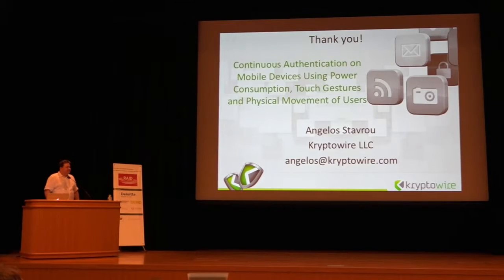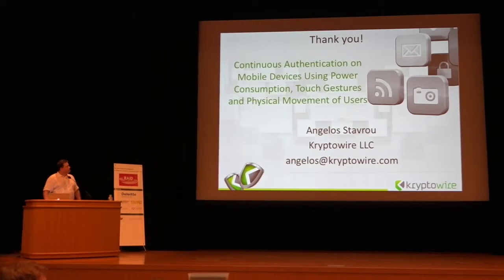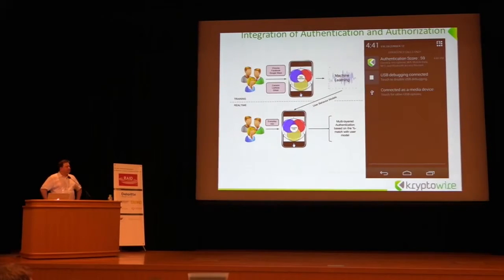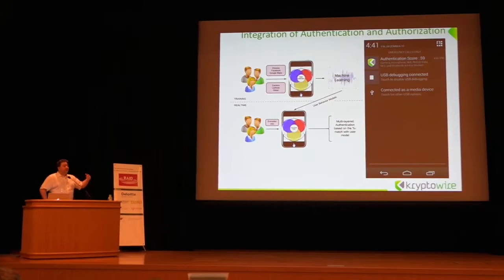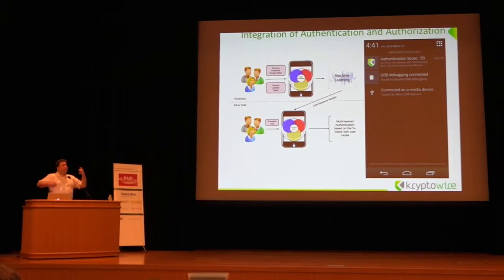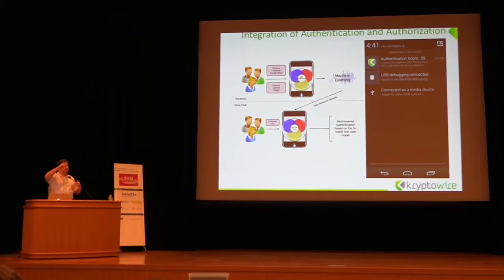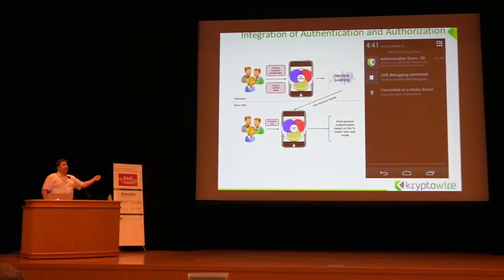Q: Thank you for the interesting talk. In your title you mention continuous authentication, but I don't quite understand why you call it continuous. A: We collect biometric data every second — as you type and touch, we create your score. This authentication score is continuously updated as you use the device. As we collect data from sensors, the authentication score updates, and applications are informed automatically. If you drop below a specific value, you may lose the capability to access documents or the camera, depending on the policy. That's why it's continuous.